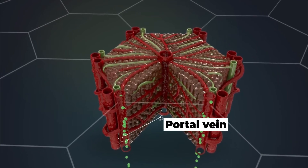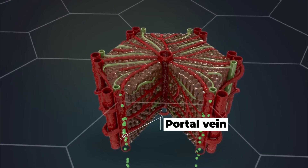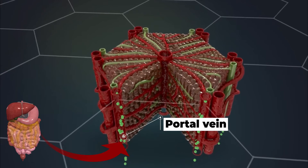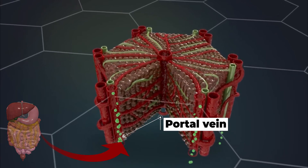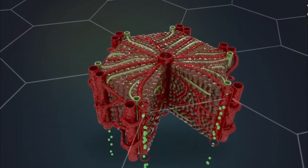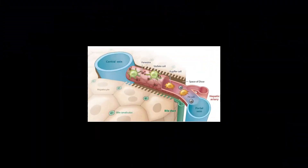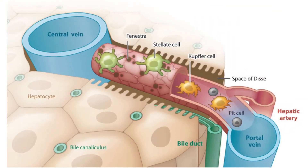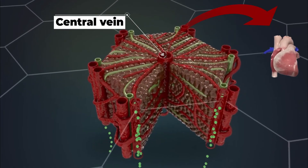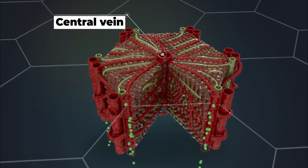At the periphery of a hepatic lobule you can see a portal vein, which carries blood from the GI tract — mainly the small intestine — and then drains it into the central vein. Between the portal vein and the central vein, blood encounters numerous macrophages known as Kupffer cells. These are specific to the liver and help to clean up any pathogens that may have been accidentally absorbed in the GI tract. The central vein then drains this blood to the heart.